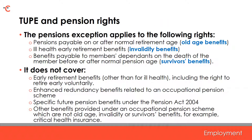Moving on to the more complex area of TUPE and pension rights — the automatic transfer principle does not apply to old age, invalidity and survivor's benefits under an occupational pension scheme. This means that any contractual terms, rights, liabilities and obligations which relate to old age, invalidity and survivor's benefits under an occupational pension scheme do not transfer to the transferee. The pensions exemption applies to the following rights: pensions payable on or after the normal retirement age (i.e. old age benefits), ill health early retirement benefits (i.e. invalidity benefits), and benefits payable to members dependent on the death of the member before or after normal pension age (i.e. survivor's benefits).